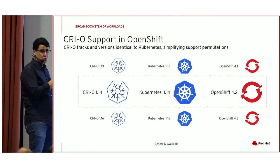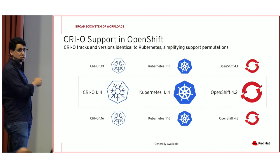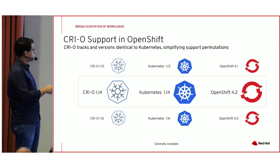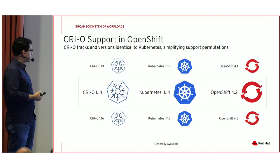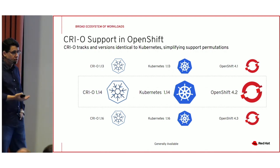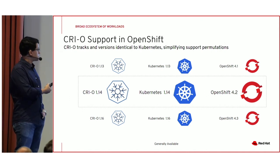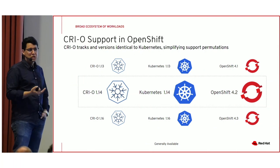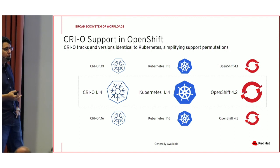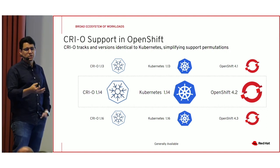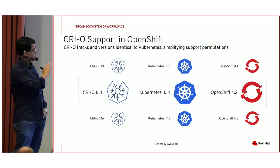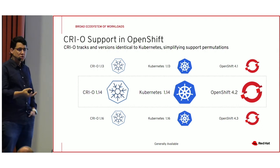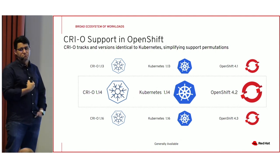OpenShift 4.2 ships with Kubernetes 1.14. One thing to note is that as we transition from 4.1 to 4.2 to 4.3, we are skipping one Kubernetes version. We looked at the features in 1.15 and 1.16, and given the timelines to ship 4.3, we decided to skip that version and have the platform handle the upgrade for you. So if you're not concerned about a specific Kubernetes feature in a skipped version, the entire upgrade process is managed by OpenShift.